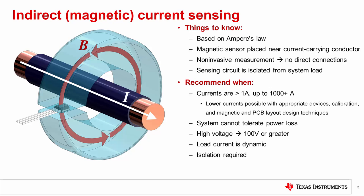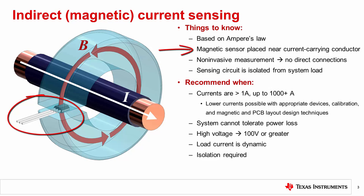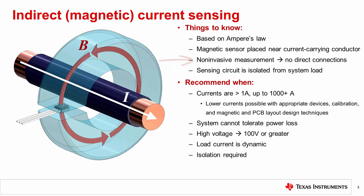Indirect or magnetic current sensing is based on Ampere's Law. According to Ampere's Law, the magnetic field in space around a conductor is proportional to the electric current through that conductor. By placing a magnetic sensor, such as a Hall sensor, near the current carrying conductor, a voltage is generated across the sensor which is proportional to the magnetic field seen by the sensor. This method allows for a non-invasive measurement where the sensing circuitry is not electrically connected to the monitored system. Since there is no direct connection between the sensing circuitry and the system, the system is inherently isolated. This makes magnetic current sensing an excellent choice for high voltage or dynamic current measurements.